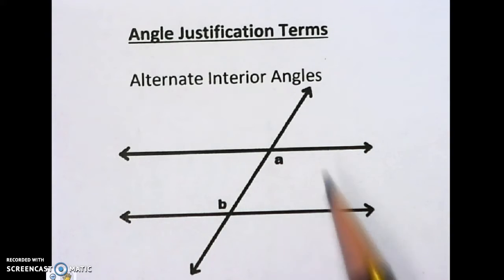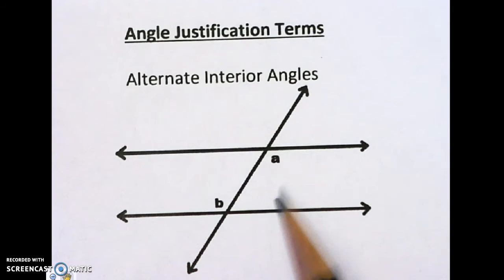I'm going to be going through a list of angles, the types of angles you use to justify your reasoning for parallel lines crossed by a transversal.